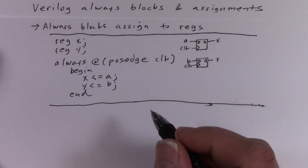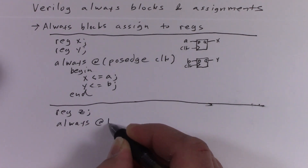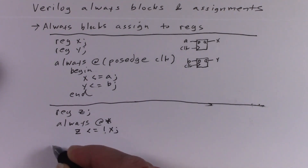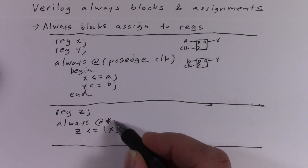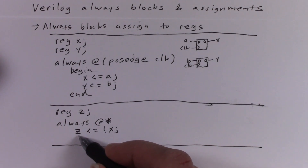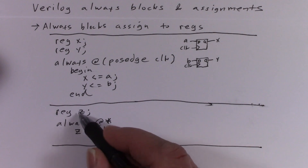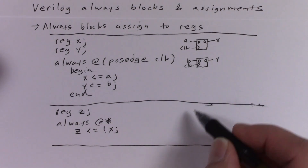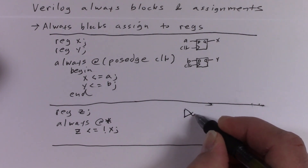So your register could be turned into a wire. In this case, we wait until any of the inputs change — that's what the star means — then we execute the body of the always block. On any input change, Z is assigned. Because that's true, no storage is necessary, so the register is not synthesized into a flip-flop. It's synthesized into a wire being fed with some logic — in this case, just an inverter.